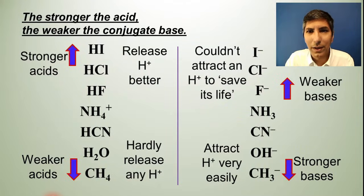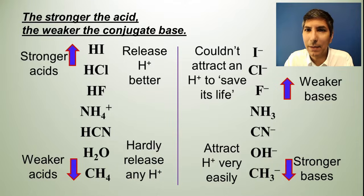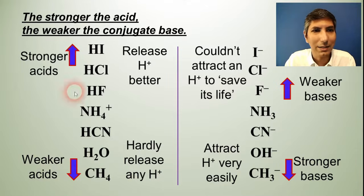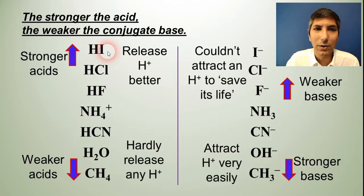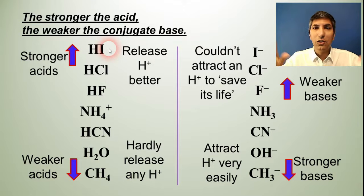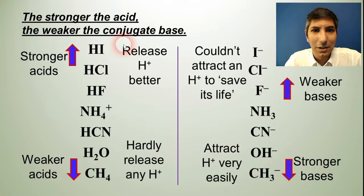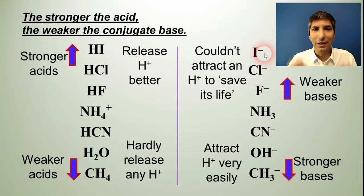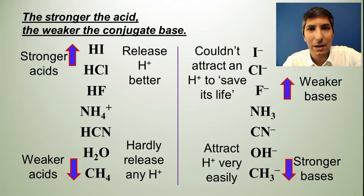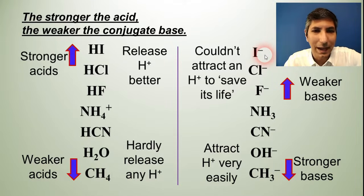Now, one thing that we mentioned earlier that's worth repeating is that the stronger the acid, the weaker the conjugate base. We actually did some mathematical calculations in an earlier video in this unit to show why that's the case. But as you can see, HI is a very strong acid. So that means that HI is going to release H+. It's going to donate protons very easily. Whereas its conjugate base, iodide, it could not attract a proton to save its life. So I- is going to be a very weak base.